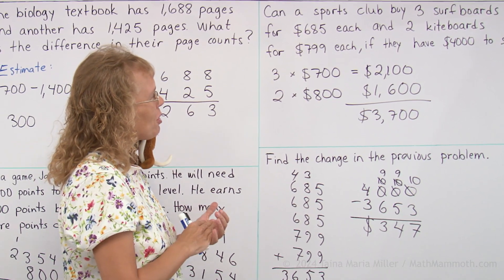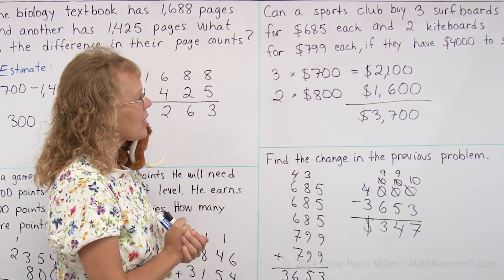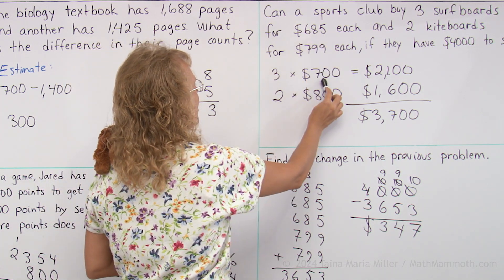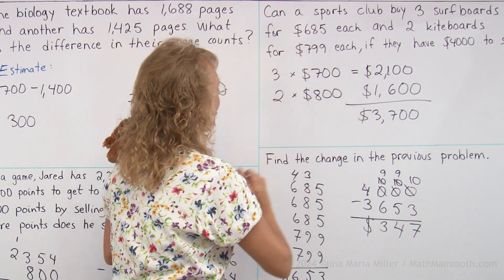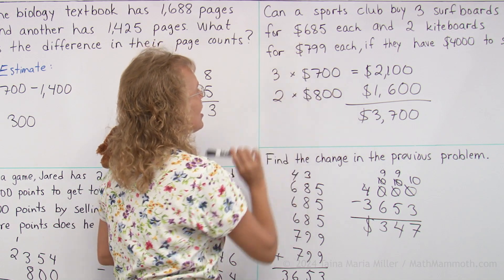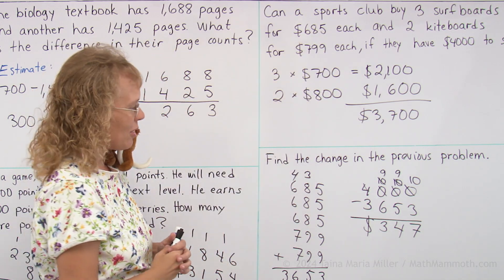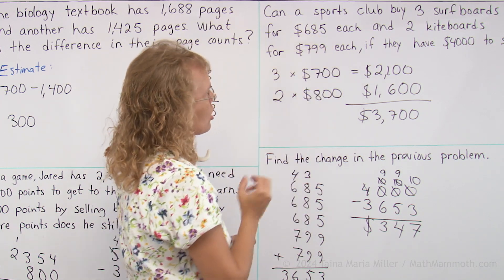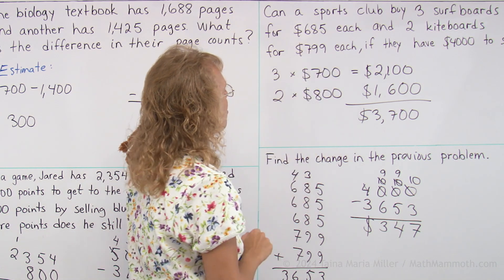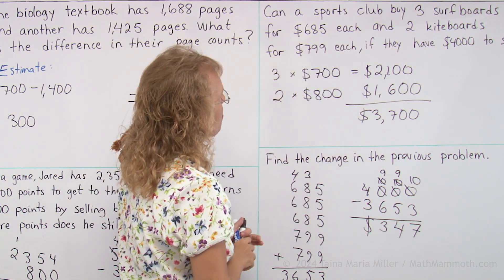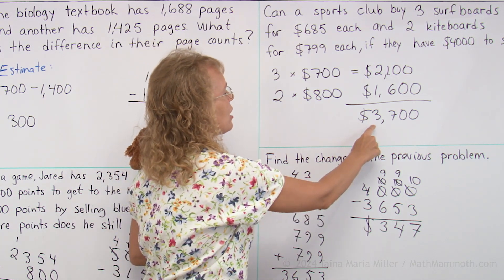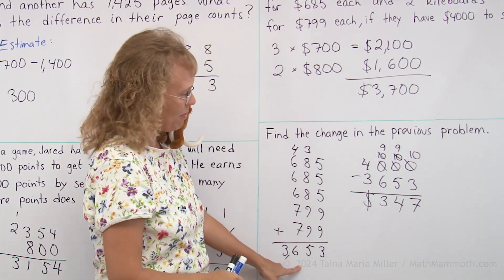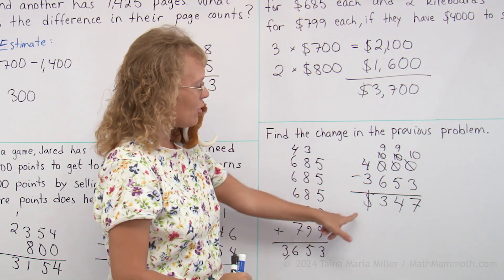I want to show you another way you could solve this. Think about how much each rounded price differs from the actual price. Here there's only $1 difference; here there's $15 difference. So you could take three times $15, which is $45, and add the $2 from there, which makes $47. The total cost would be $47 less than $3700. Then you would find the change using the normal method.